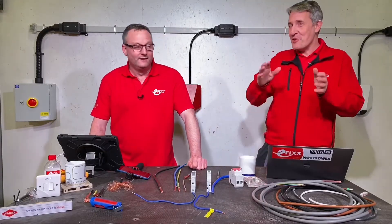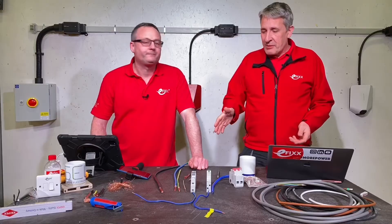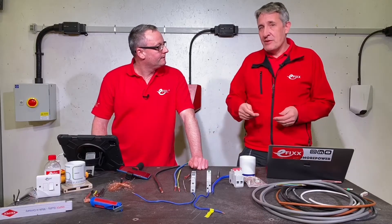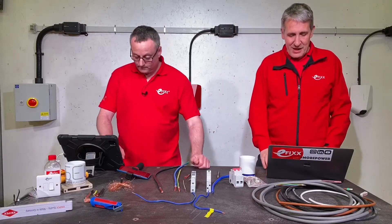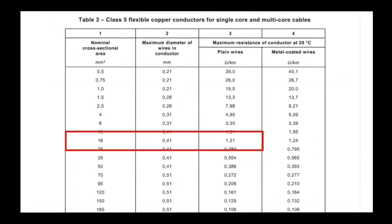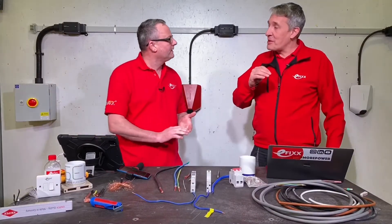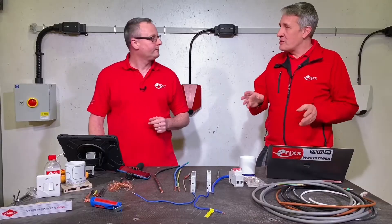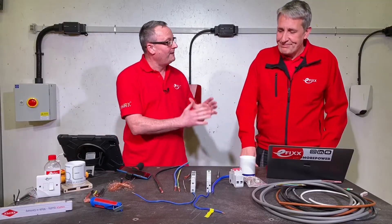That's a lot of strands — more than I thought would be in there. So that's a tri-rated cable. The same classified conductors are used in flexible cables. Obviously the bigger the cable, there tends to be more individual strands, and the maximum diameter of those strands is defined in the regulation. For a class 5, 16mm conductor, the standard doesn't tell you how many conductors have to be in there, but it does tell you the maximum diameter and it defines the resistance of the cable.